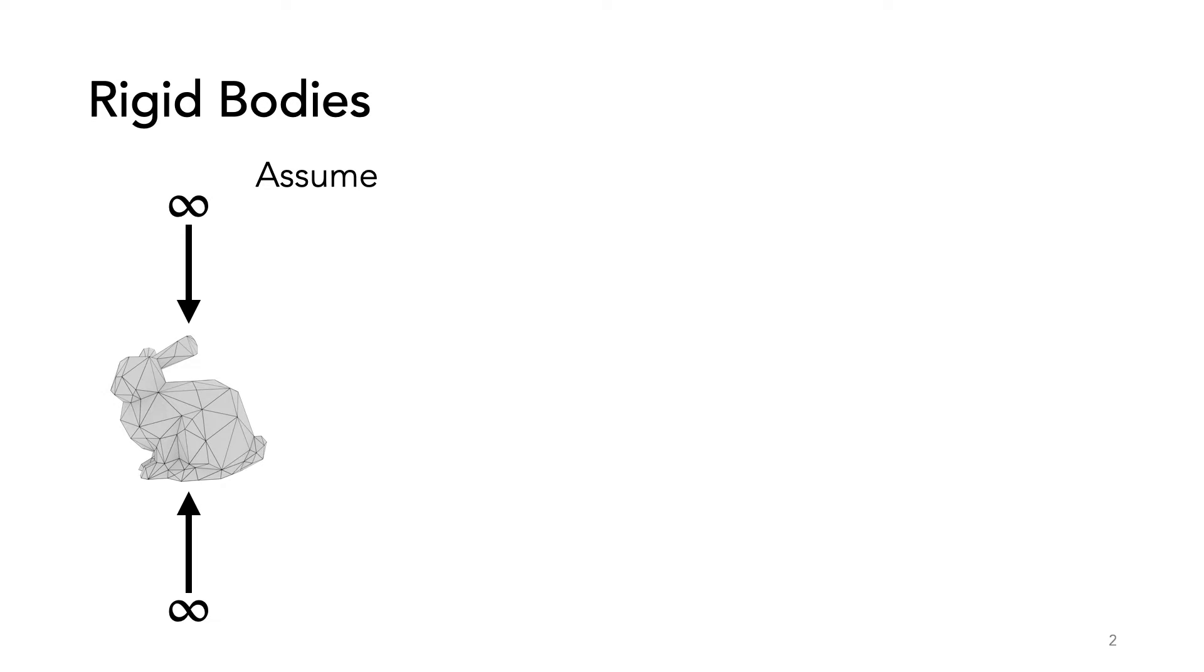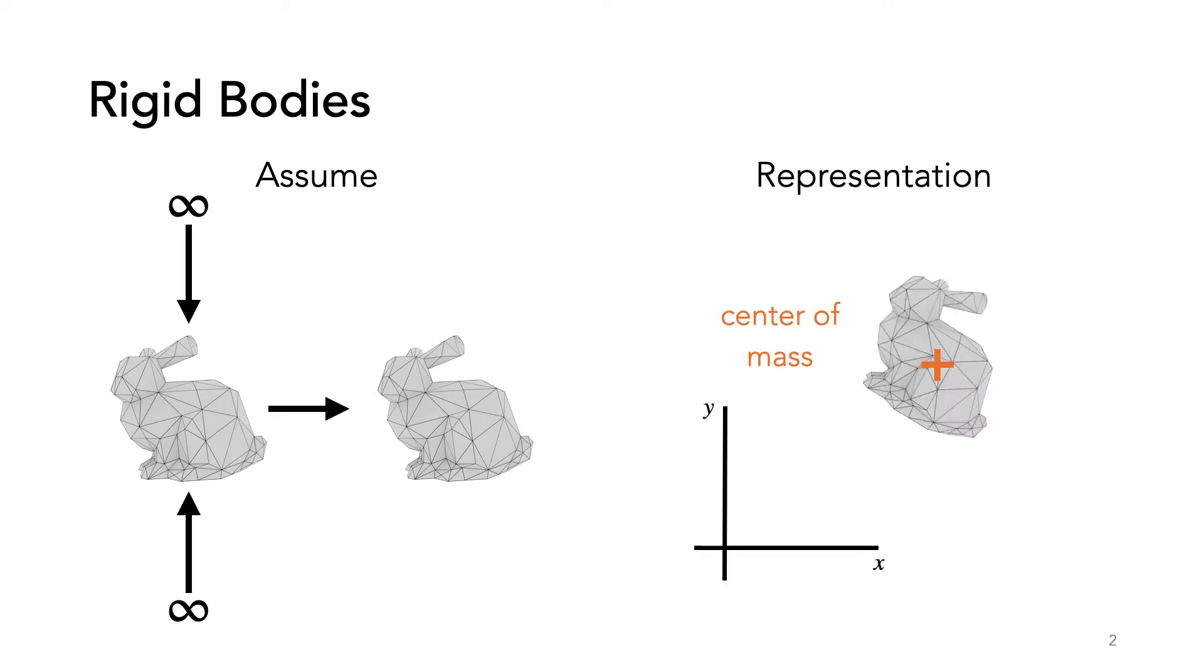A rigid body is an object whose material is infinitely stiff, so even if we apply an infinite force, the object will not deform. Because of this, rigid bodies only have a few degrees of freedom: the position lowercase q and rotation uppercase q.